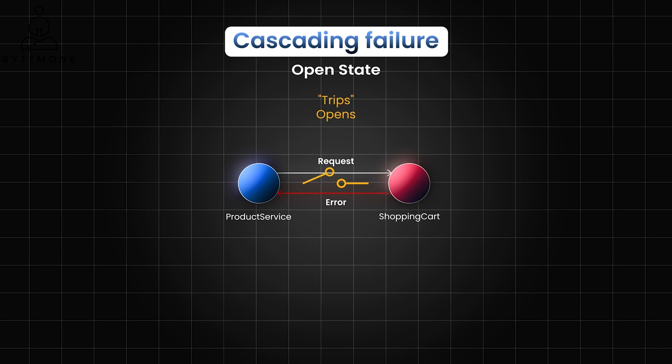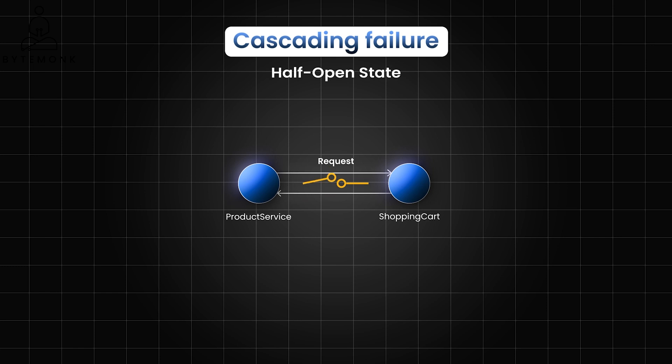When the circuit breaker opens, subsequent requests are immediately rejected without even trying to reach the failing service. After a timeout period, the circuit breaker enters a half-open state. In this state, a limited number of test requests are allowed through to the dependent service. If these requests succeed, the circuit breaker assumes the service has recovered and returns to the closed state. If they fail, it goes back to the open state.